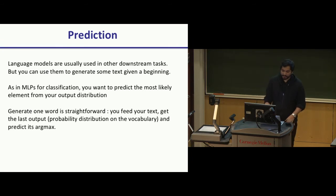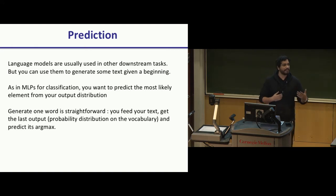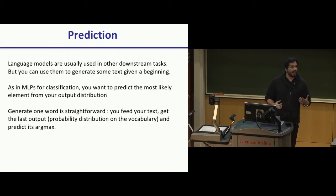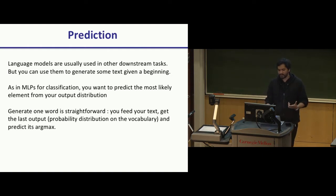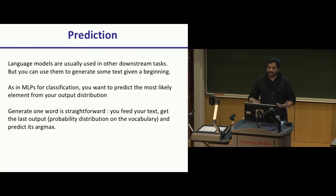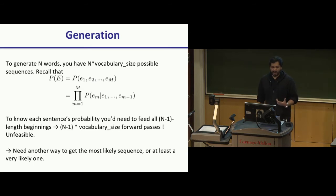In terms of predictions, language models are generally used downstream of other larger problems like speech recognition. Just like in MLPs for classification, you want to pick your most likely class from your output probability distribution using argmax. Generating one word is straightforward: feed the RNN the sentence up to that word and have it predict the next word. Generation of N words is a harder problem — you have N times the vocabulary size different possible sequences, making exhaustive search infeasible.